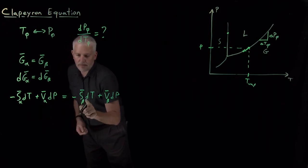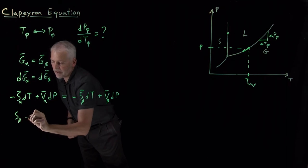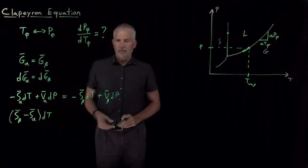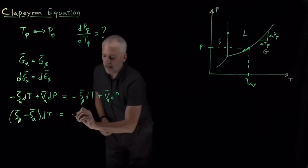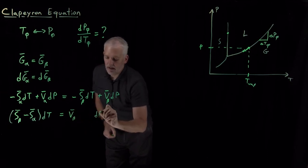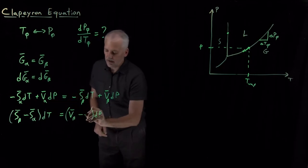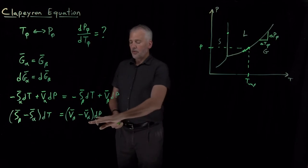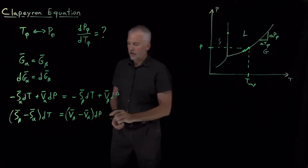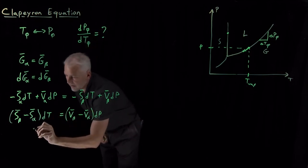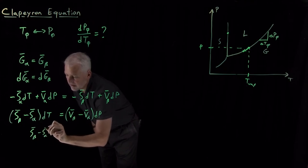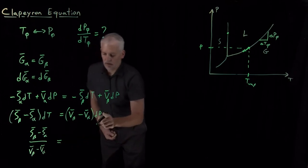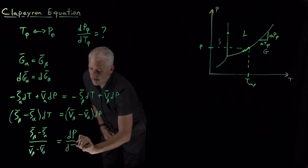Let's rearrange to get the entropies on the left side. I'll bring minus S_beta dT over to the left as positive S_beta, combine it with minus S_alpha times the same dT. On the right side I'll bring the volumes over: V_beta dP minus V_alpha dP. That gives us (S_beta minus S_alpha) dT equals (V_beta minus V_alpha) dP. Bringing dT to the denominator and the volumes to the other side, we get dP/dT equals (S_beta minus S_alpha) divided by (V_beta minus V_alpha).